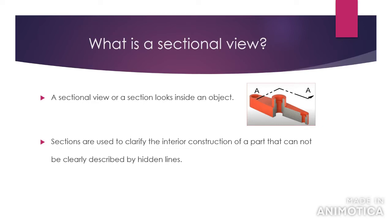What you're doing is cutting out the object so you can see the insides or the workings of the object. Sections are used to clarify the interior construction of a part that cannot be clearly described by hidden lines. Sometimes you have hidden lines on your drawings but it's not actually showing clearly what's going on in the construction or in the part.